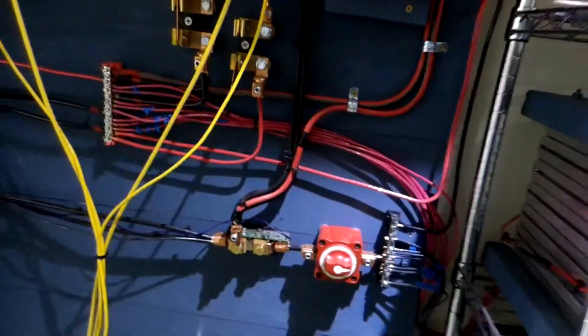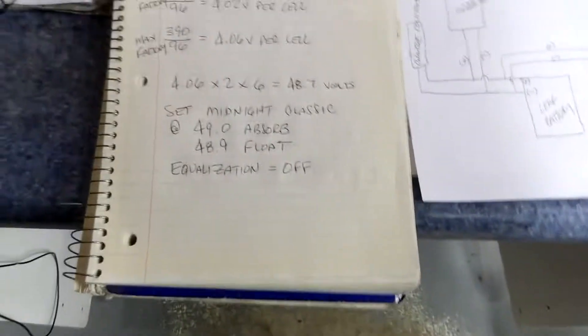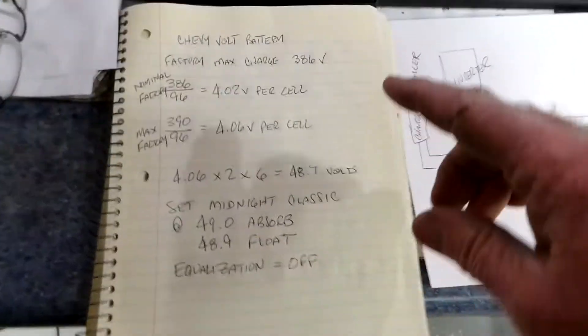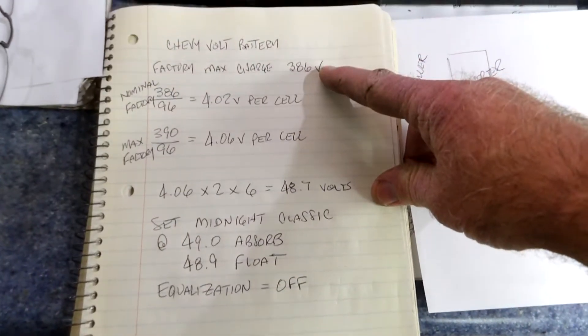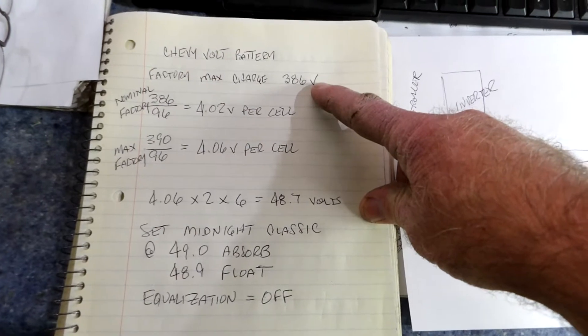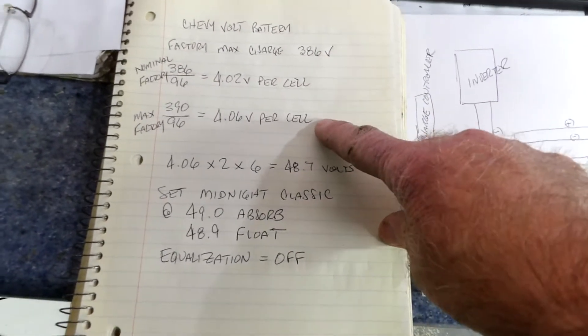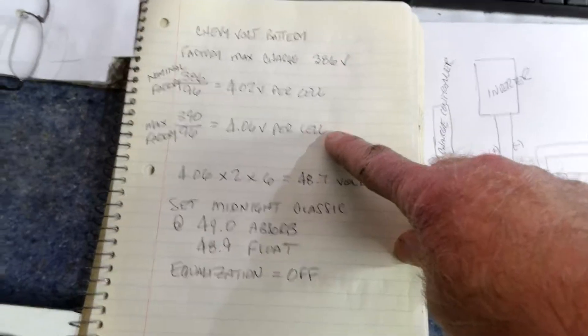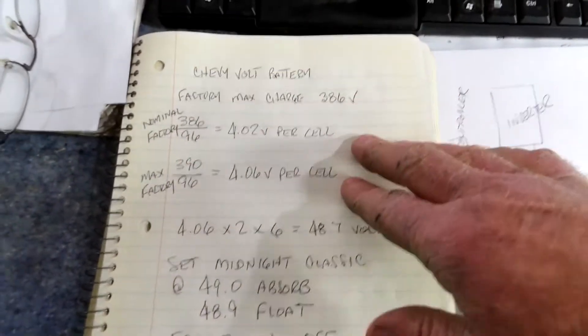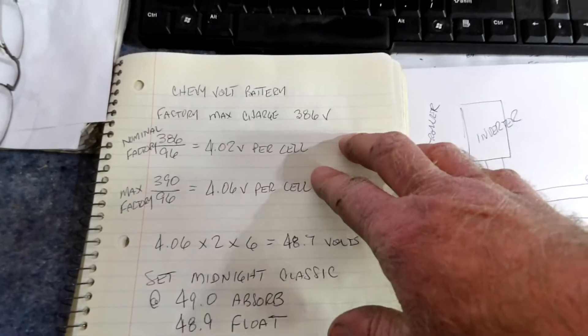It isn't in absorb right now, so there's still some voltage going into them. Why do we pick 4.06 as a target voltage maximum? From the factory, a Chevy Volt's nominal maximum charge is 386 volts. The factory absolute maximum is 390. From what I was told from a friend who knows a lot about Chevy Volts, 390 is the limit, but what this does is only charge the battery to about 85%.